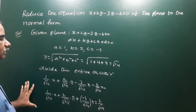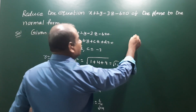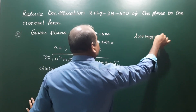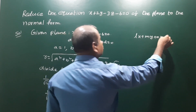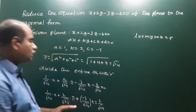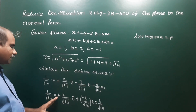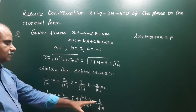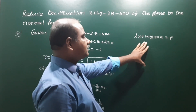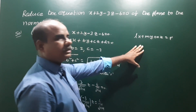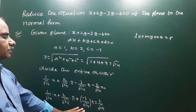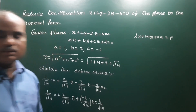Now this is in the form lx plus my plus nz is equal to p. This is the normal form, where l, m, n are the direction cosines of the normal to the plane, and p is the perpendicular distance from the origin to the plane. So that is the answer.